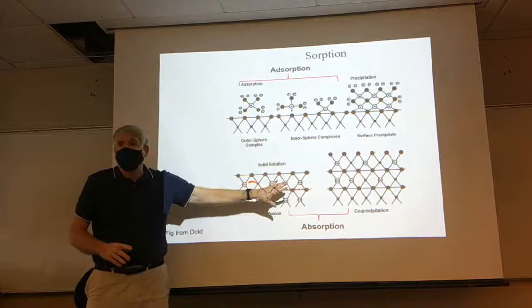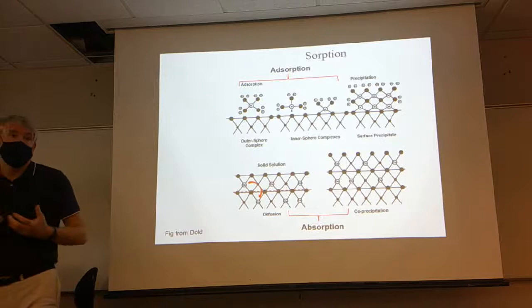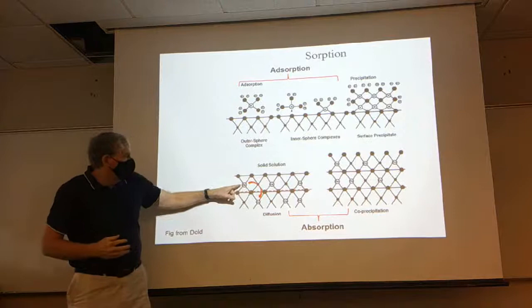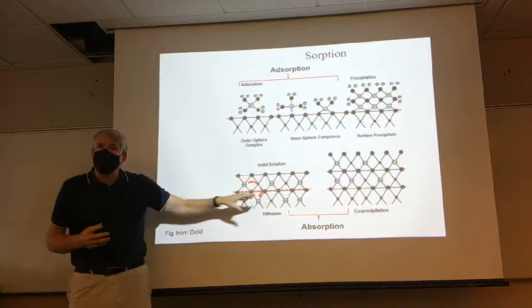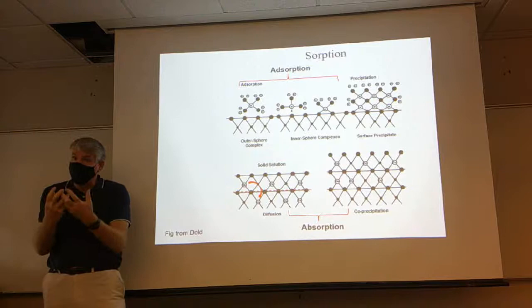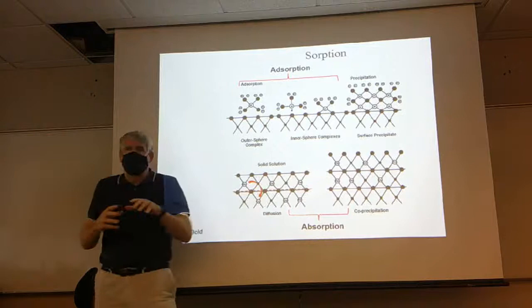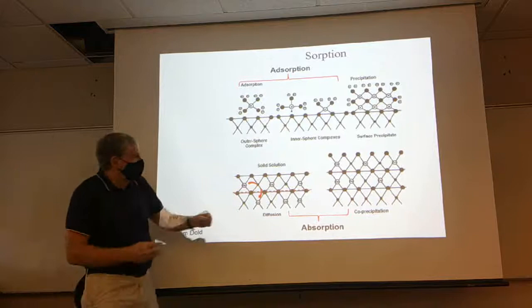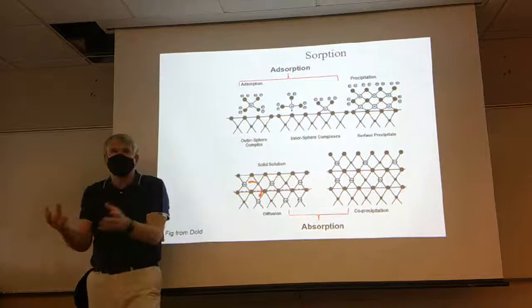Down here is this thing called absorption — with a 'b' — and we're not going to spend a lot of time on that. There are two ways in which it occurs: one is diffusion, where cations diffuse into the outer part of the mineral layer and become part of that crystalline structure. The other is co-precipitation, where material gets re-precipitated on that surface and cations become reincorporated into the outer surface.